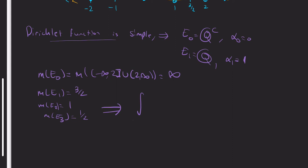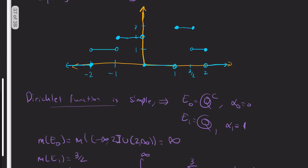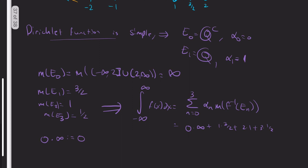I'm going to say that the integral from negative infinity to infinity of f(x)dx is the sum from n=0 to 3 of α_n times the measure of E_n. That is the definition. This equals 0 times infinity plus 1 times 3/2 plus 2 times 1 plus 3 times 1/2. This term is probably bothering you - what is 0 times infinity? 0 times infinity is defined as 0. Because remember that measures map - infinity is an allowed value.